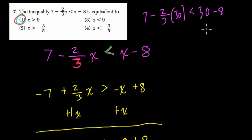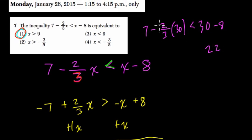Plugging in 30. x, 30 minus 8 is 22. 2/3 of 30, well, 30 over 3 is 10, times 2 is 20. 7 minus 20 is definitely negative 13, and that's definitely less than 22. So this works. Alright, hope this helped.